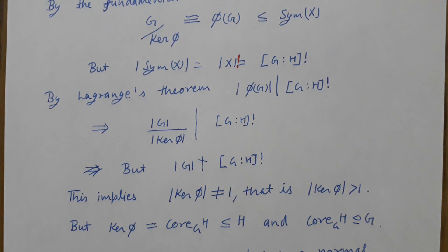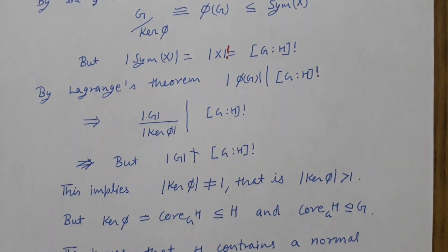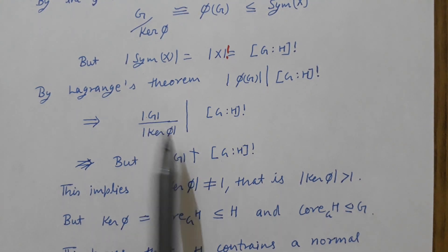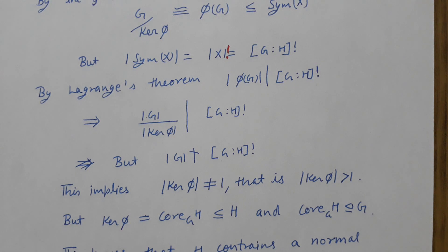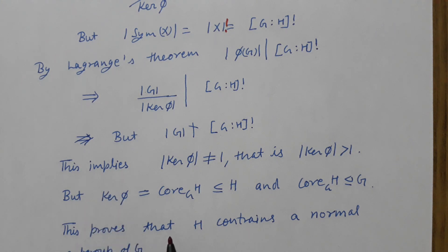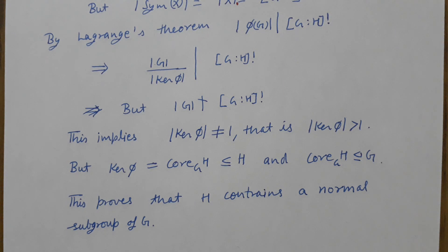So what does this mean? It means the kernel cannot have order one — the order of kernel(φ) cannot be one — because G itself will not divide it. Therefore G divided by this kernel divides the factorial, so the kernel must be non-trivial. But the kernel is the core of H in G, which is a subgroup of H. Since the kernel is non-trivial, we get that core of H in G is a non-trivial normal subgroup of G contained in H. Hence we have proved that H contains a normal subgroup of G, which is the result we wanted to prove.